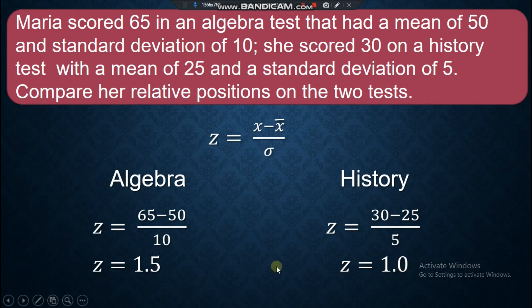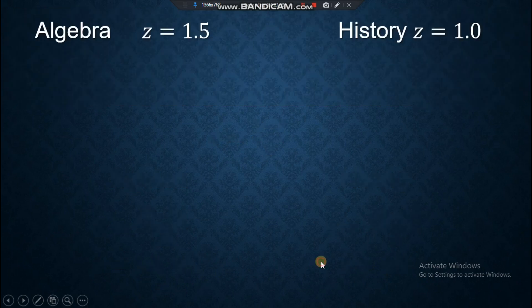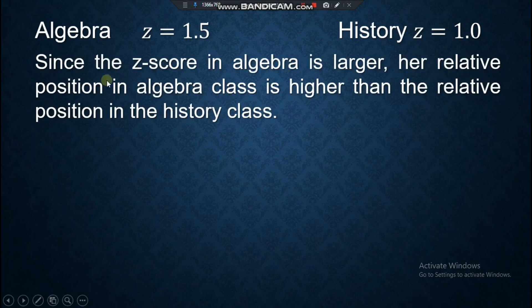Now we can compare the scores of algebra and history. You have algebra is 1.5, history is 1.0. Since the Z-score in algebra is larger, the score in algebra is larger. Her relative position in algebra class is higher than the relative position in the history class.